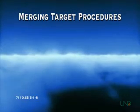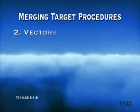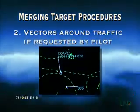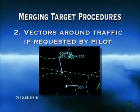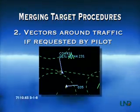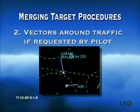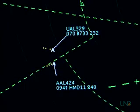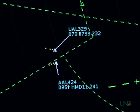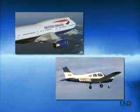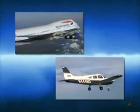The second element of merging target procedures is to provide vectors around traffic if requested by the pilot. Note that it is up to the pilot to ask for the service, but you must issue the traffic call in a timely fashion so that the pilot has time to decide if a vector is necessary. If aircraft are separated by more than the vertical separation minimum, you can still issue traffic if you feel it is necessary. Remember that in a Piper Warrior, a Boeing 747 looks pretty big even if it is 2,000 feet above you.